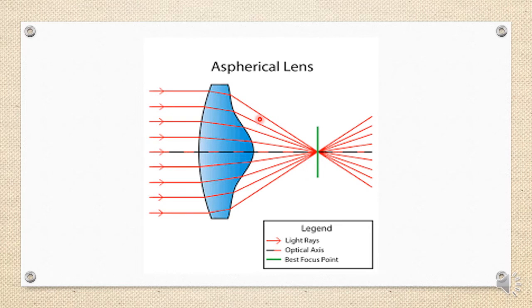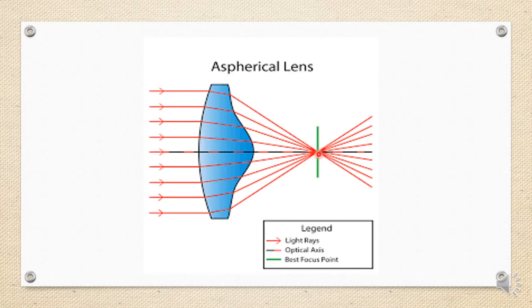Spherical aberration can be corrected using an aspheric lens, which is increasingly common, especially for higher powers. Aspheric lenses maintain the prescribed power at the center but flatten the curve toward the periphery of a convex lens, reducing the prismatic effect and power at the periphery. The aspheric — meaning non-spherical — surface with different curves present on it leads to better image quality, a single focal point, and reduced spherical aberration.